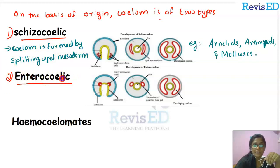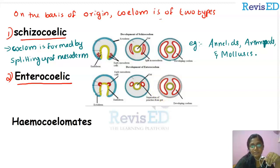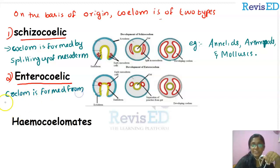Now for enterocoelic: the blue portion is the ectoderm and the yellow portion is the endoderm. You can see two red patches — that is the mesoderm, which is originating from the endoderm. They form a pouch and then extend to form a cavity which is a true coelom in nature, but the mesoderm is originated from the enteron.